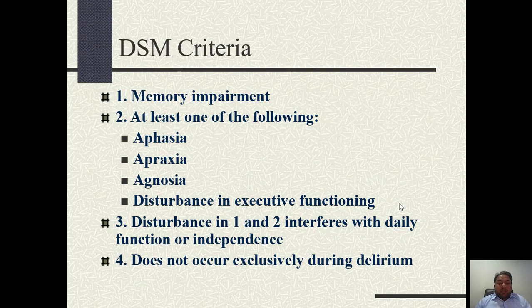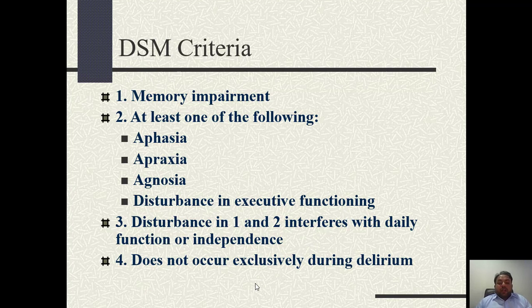First of all, what is dementia? Dementia is defined by DSM criteria as memory impairment plus at least one of the following: aphasia, apraxia, agnosia, or disturbance in executive functioning. The disturbance in memory and in those features should be at such a level that it interferes with the daily functioning of that person. It should not exclusively occur during delirium, which is a transient process that occurs due to metabolic disturbance or any infections.